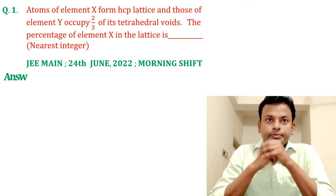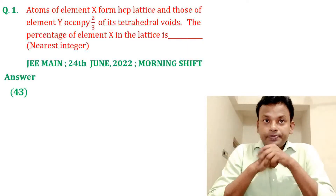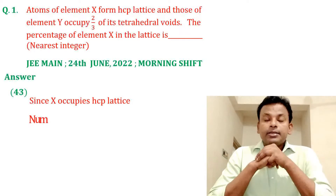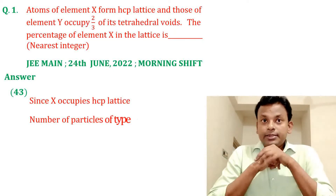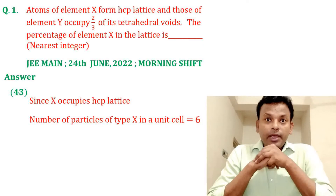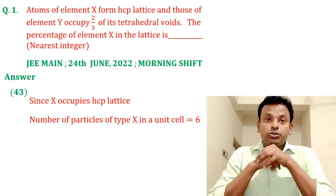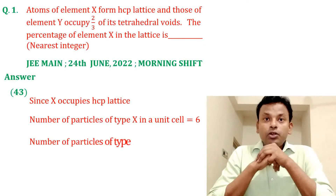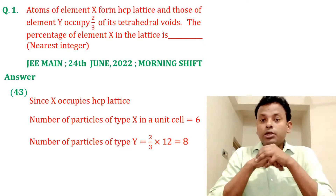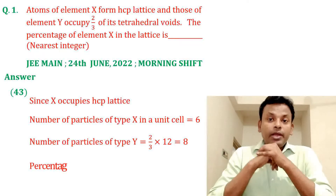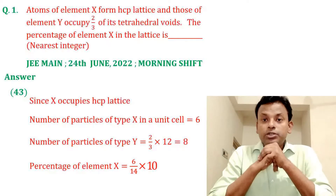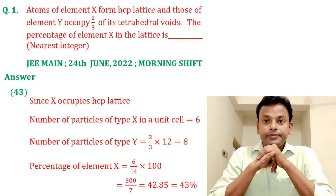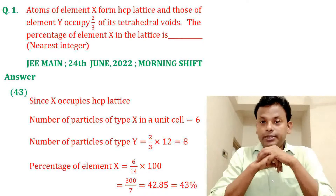Answer is 43. Since X occupies an HCP lattice, number of particles of type X in unit cell equals 6. Number of particles of type Y: 2/3 × 12 = 8. Percentage of element X = 6/14 × 100 = 43. So the answer is 43.